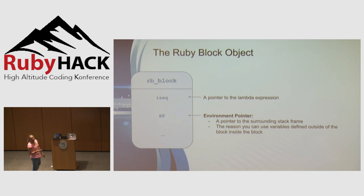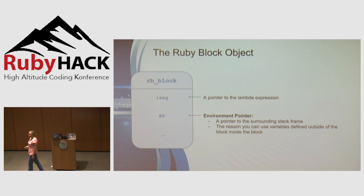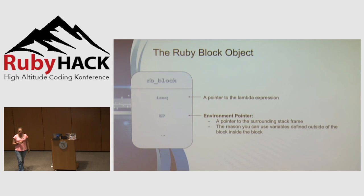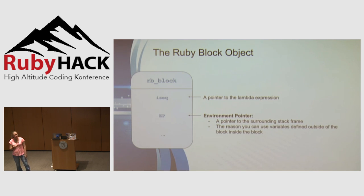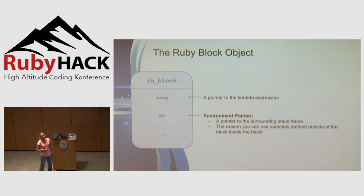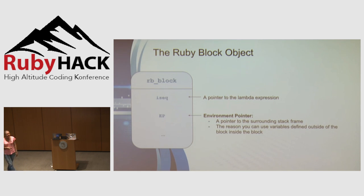In Ruby, any code you execute is always running inside some other method, so it will always have a surrounding stack frame. Even code in your console executes inside the eval method. In the following slides I'll often show the surrounding method so I can show you that surrounding stack frame. To show what the environment pointer does, let's first look at what happens during a normal method call.